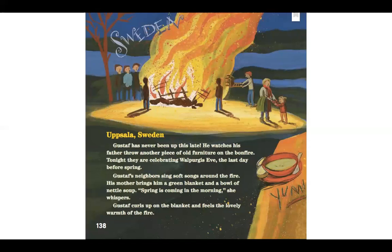Gustav has never been up this late. He watches his father throw another piece of old furniture on the bonfire. Tonight, they are celebrating Walpurgis Eve, the last day before spring. Gustav's neighbors sing soft songs around the fire. His mother brings him a green blanket and a bowl of metal soup. 'Spring is coming in the morning,' she whispers. Gustav curls up on the blanket and feels the lovely warmth of the fire.